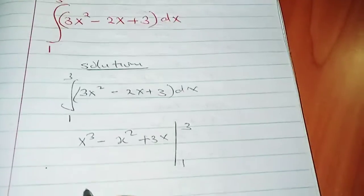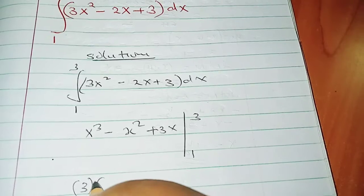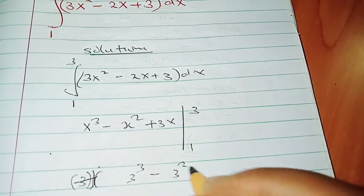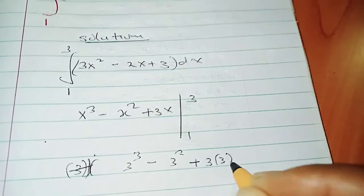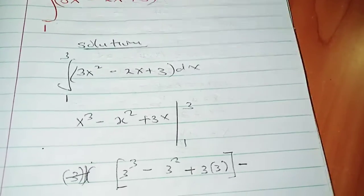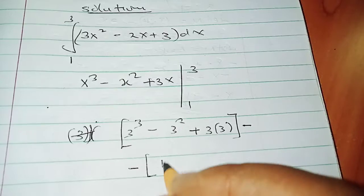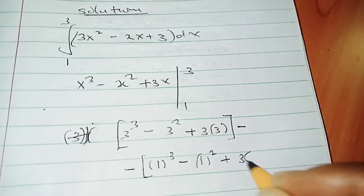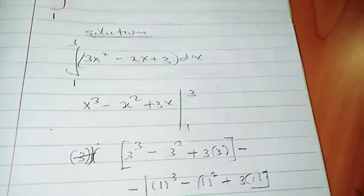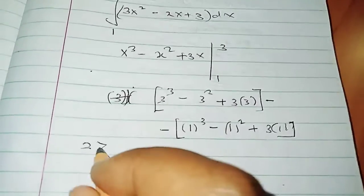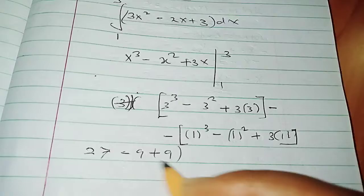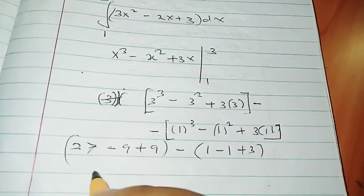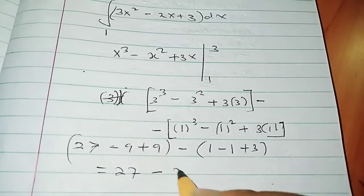Substituting this gives us 3³ - 3² + 3(3), that's when you substitute the upper limit, minus, substitute the lower limit, which we have 1³ - 1² + 3(1). So this one gives me 27 - 9 + 9 minus 1 - 1 + 3, and so this gives me 27 - 3, which is 24.